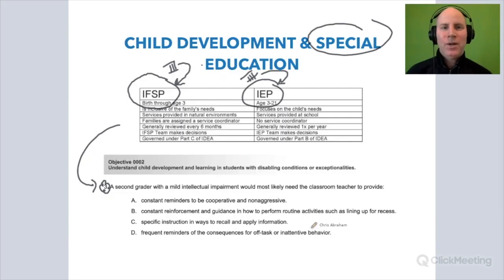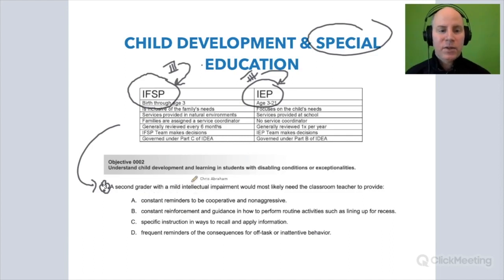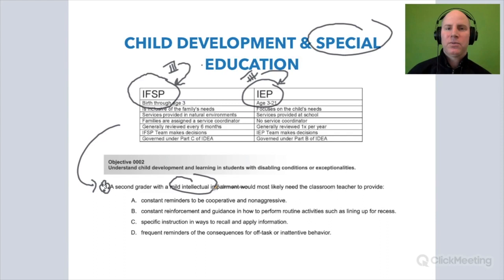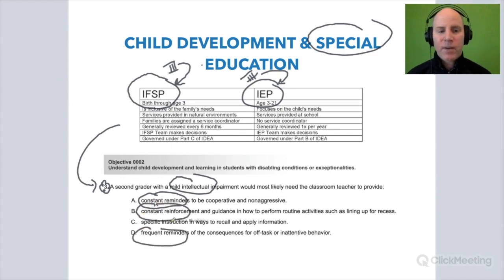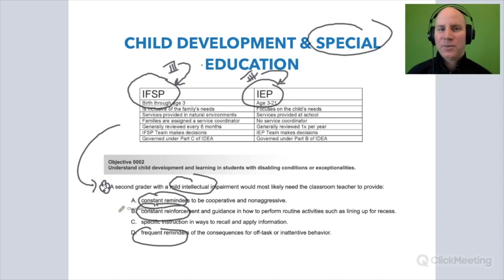Let's look at a few phrases in the question. In dealing with a child with a mild intellectual impairment — so having some sort of learning disability — notice that options A, B, and D use the words 'constant reminders,' 'constant reinforcement,' and 'frequent reminders.' Frequent is the same as constant, right?